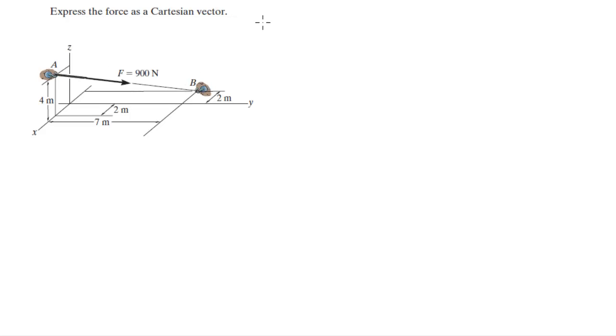So the first thing we have to find is the vector AB. And to do that, the first thing is to find all the position vectors of all the points involved. So A sits at 2i plus 0j plus 4k. And B sits at negative 2i plus 7j plus 0k.